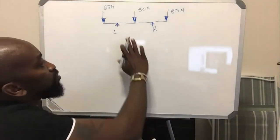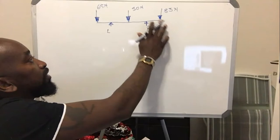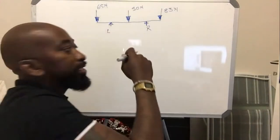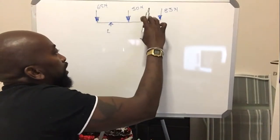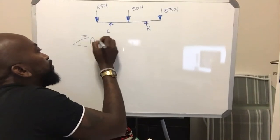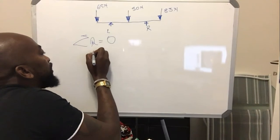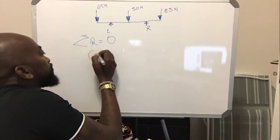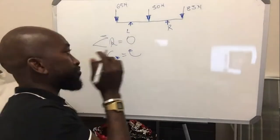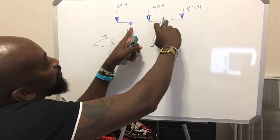What you do here is basically work on one moment and disregard the other one by making a referral point on the other one to get the unknown. So in this case, to get the moments of L, you have to work with R as your referral point. The symbol for moments: moment dot R is equal to zero. The standard rule is that anti-clockwise forces should equal clockwise forces.